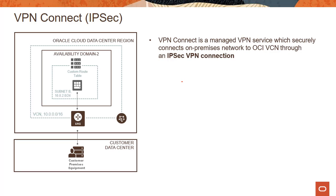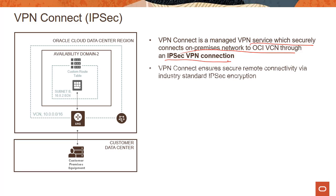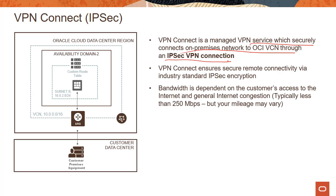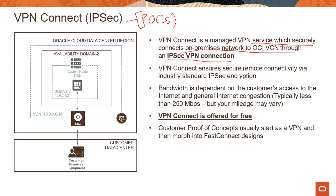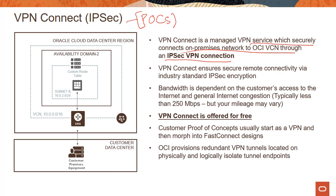VPN Connect is a managed VPN service that securely connects your on-premises environments to an OCI VCN through an IPsec VPN connection, using industry-standard IPsec encryption. Bandwidth is dependent on the customer's access to the internet and general internet congestion. VPN Connect is best for running proof of concepts — if you have requirements around enterprise apps, our guidance is to use Fast Connect instead. VPN Connect is offered for free. Customers typically start with VPN and then move to Fast Connect designs as they go into production.